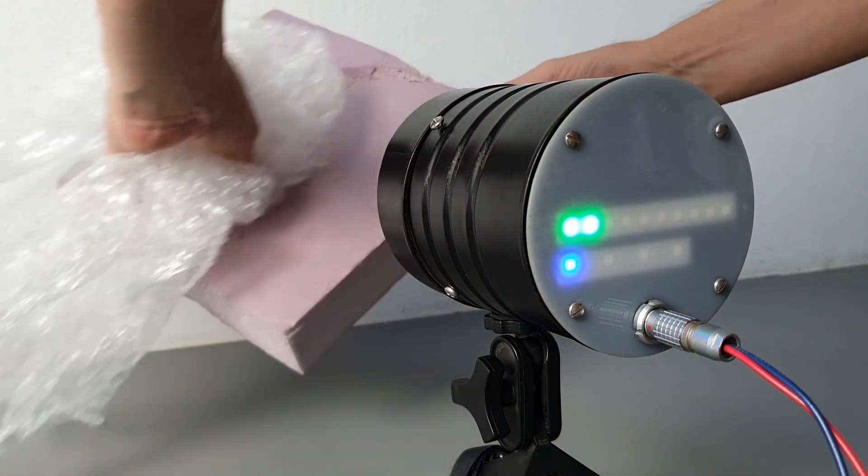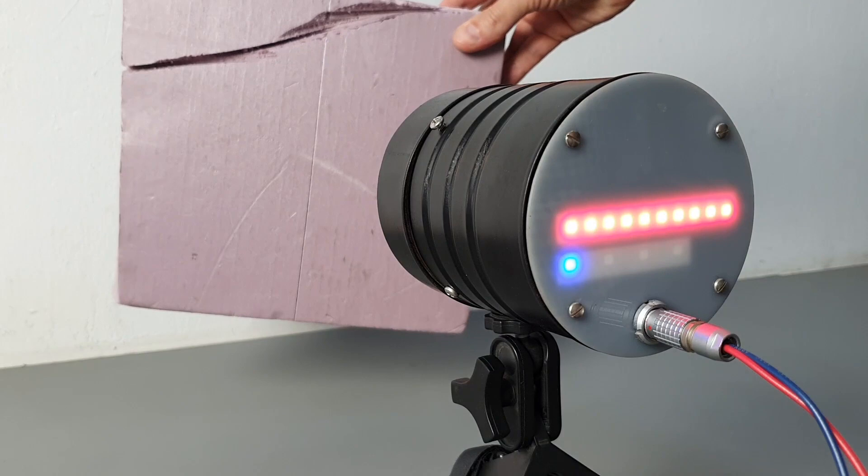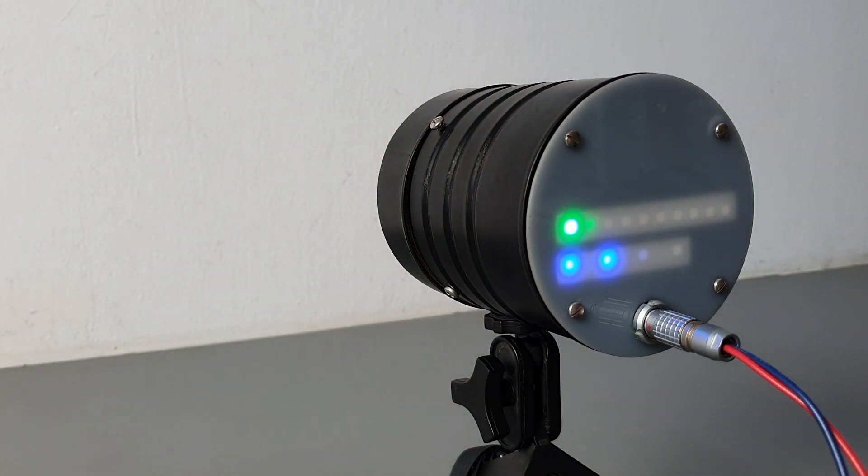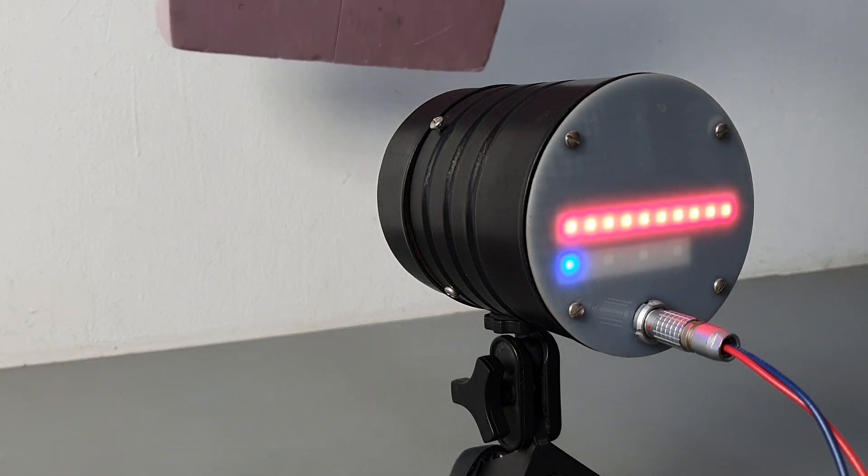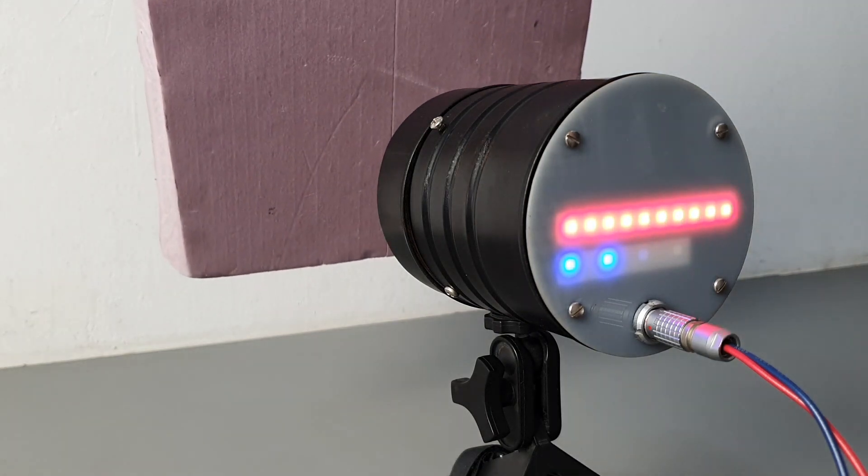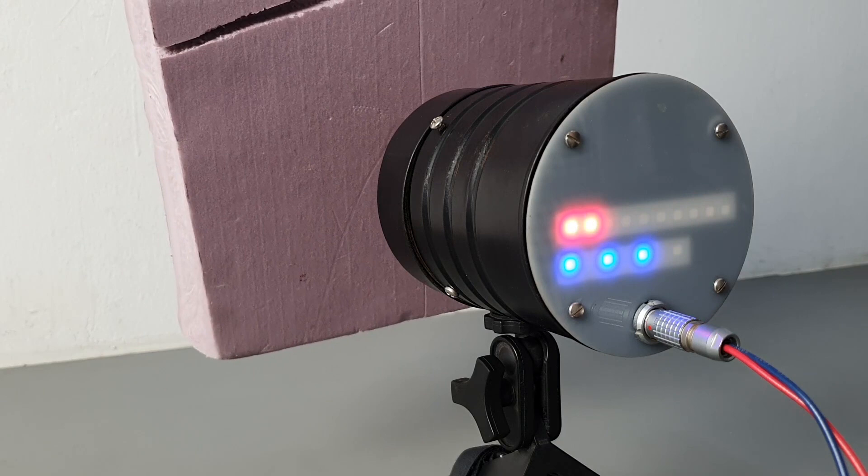Rubbing two different plastic materials together can create enormous surface voltages. One becomes positively charged while the other becomes negatively charged. As the material approaches you can see the range selector light changing on the bottom row.